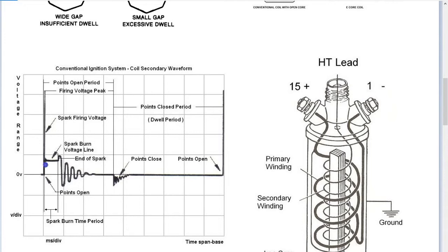The scope line shows what occurs when the points open: we get the initial voltage potential rising up to around 10,000 volts, which ionizes the air gap between the spark plug electrodes, and then the spark flows across the air gap. The voltage required to keep the spark flying across the air gap is much lower — about 2 to 3 kV. In less than one millisecond, the spark burns and the energy is dissipated from the coil secondary.